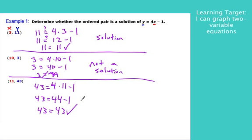So notice there's multiple solutions here for Y equals 4X minus 1. In fact, there's an infinite number of solutions. Anything I plug in for X will give me a different number for Y.